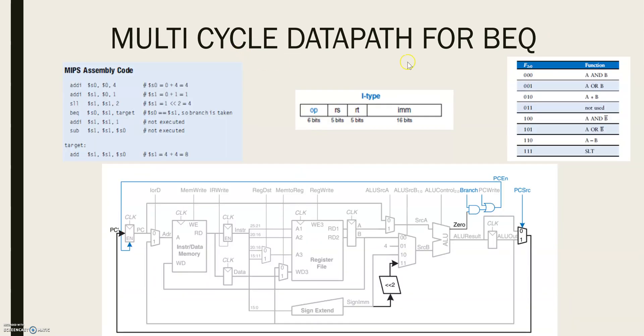Now let's see the multi-cycle data path for BEQ. In this MIPS assembly code, you can see that the format of a BEQ consists of two registers and a target label value.